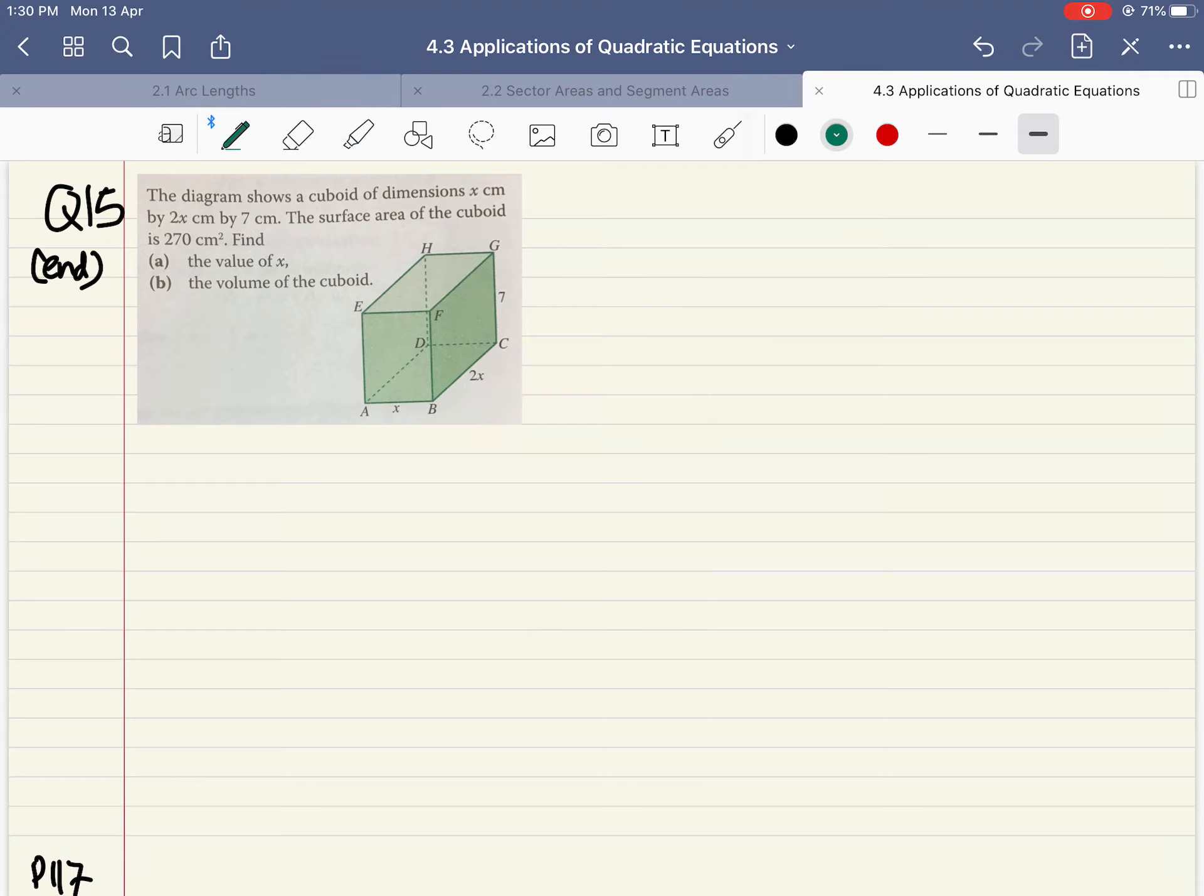The final question I'll cover is question 15. Question 15 shows a cuboid of dimensions x by 2x by 7. The surface area of the cuboid is 270, find the value of x. We know there are six surfaces. One surface, the dimension is x by 7, this surface here and here. Another surface on the top, the dimensions are x by 2x, on the top and on the bottom. Finally, the surface that has dimension 2x by 7, which is here and here as well.